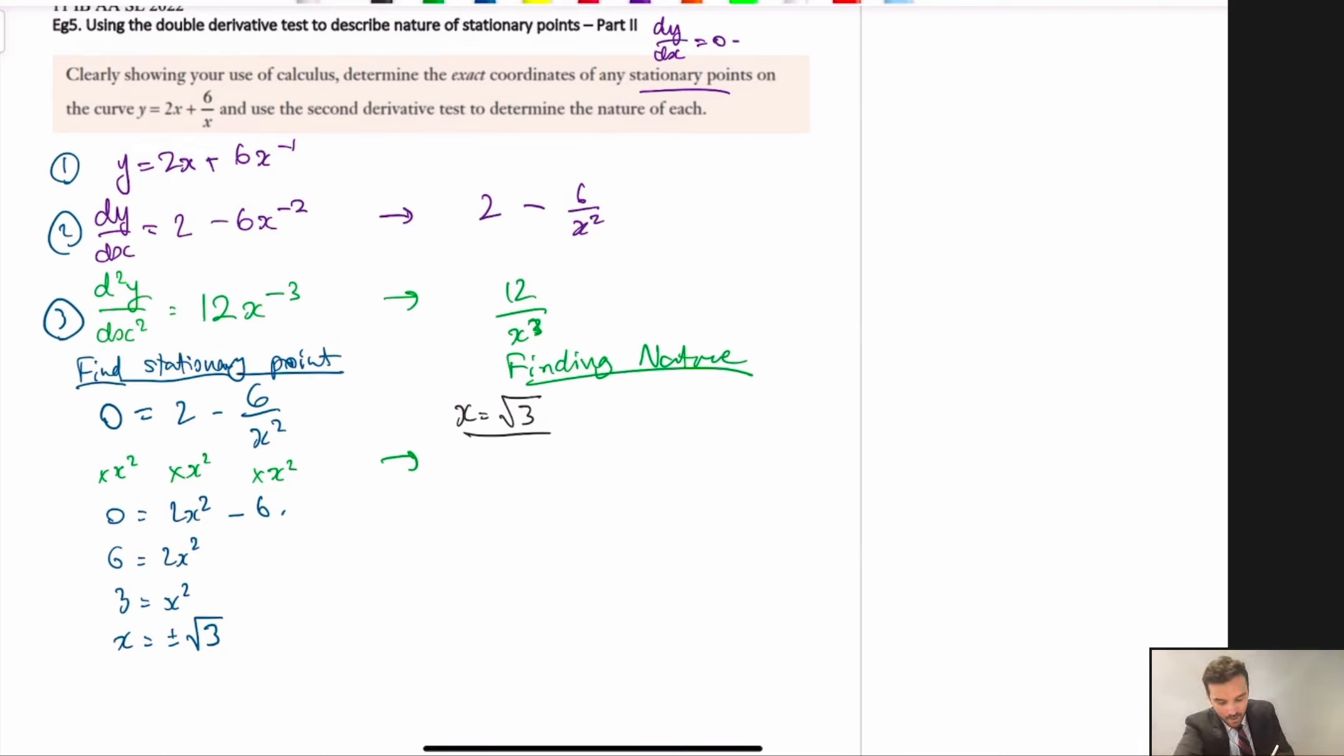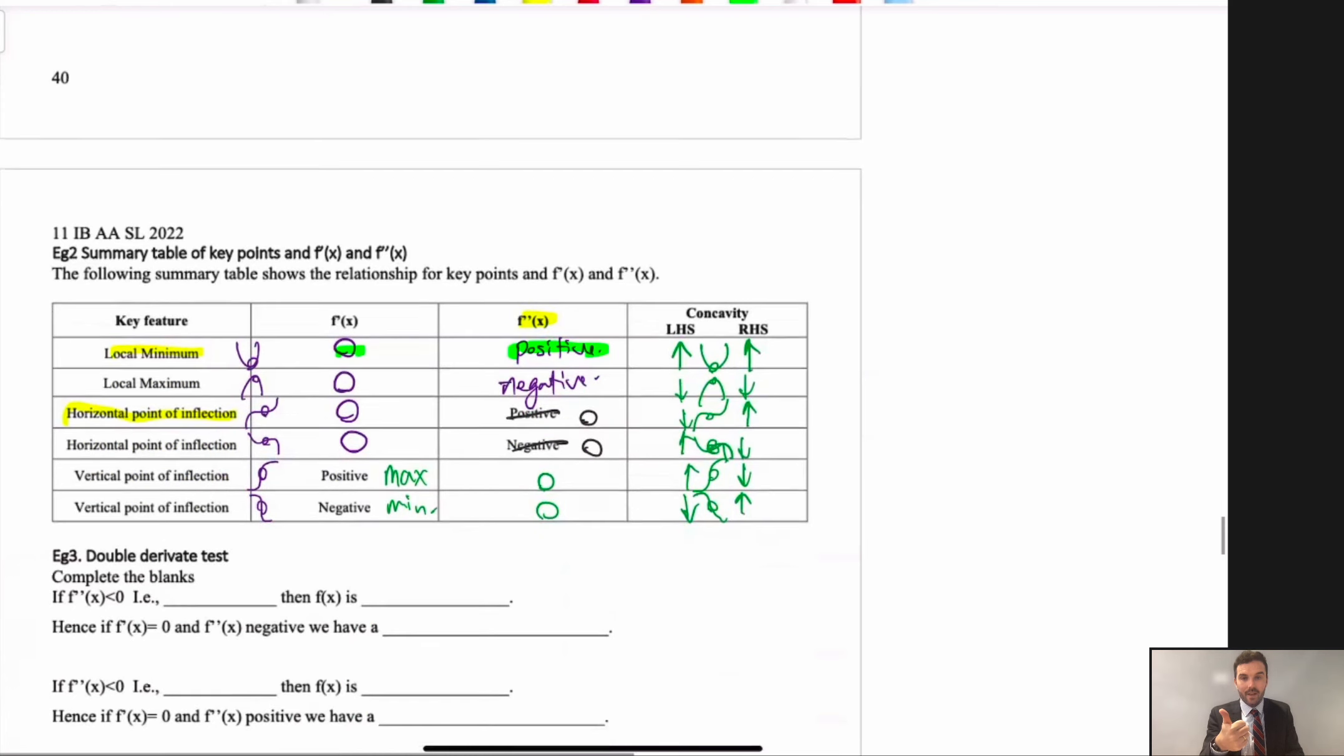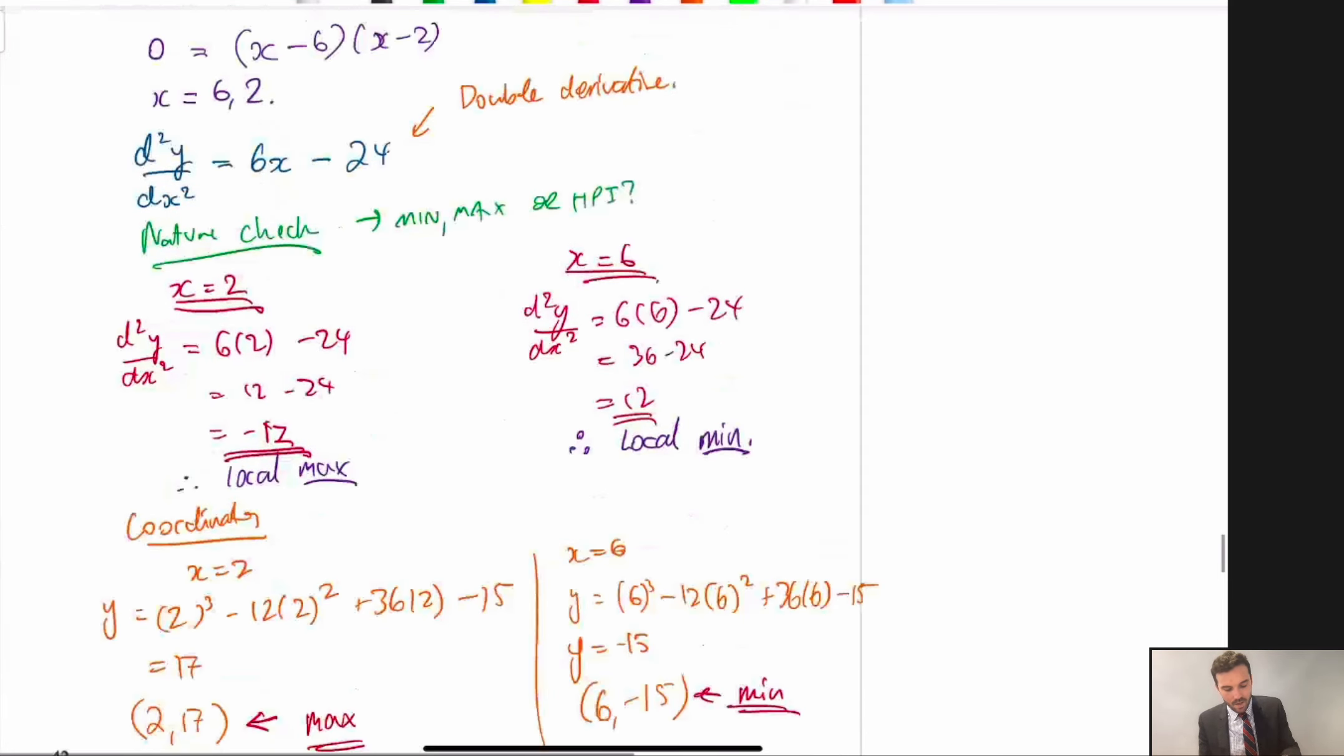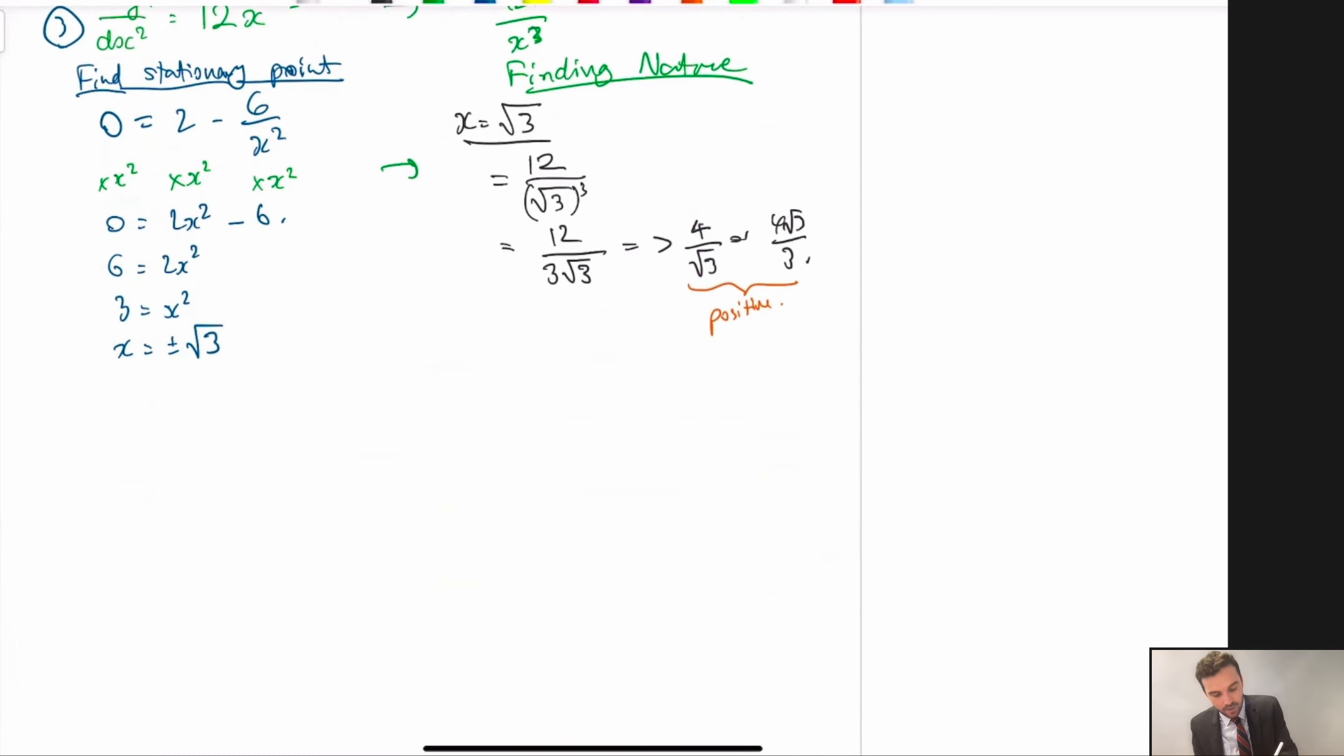We're going to use our double diff equation, and we're going to plug it in. Now, in this case here, it's going to be, in the end, 12 on 3 root 3, which becomes 4 on root 3, or you can write that as 4 root 3 on 3. Now, in the main thing, all we need to know is that this is positive, okay? So, this answer is positive. Now, we can go back to our summary table. We know that the gradient was 0, and that the double diff was positive. We know this is, therefore, a local minimum, okay? So, we can say that we've just found a, it's a local min for x is equal to root 3.